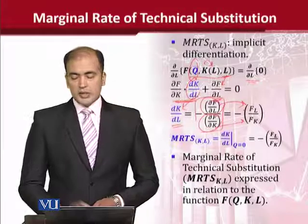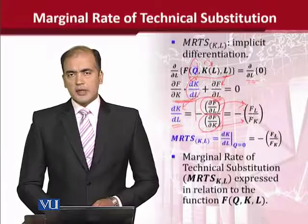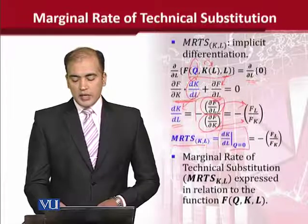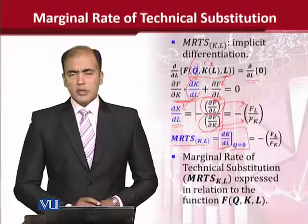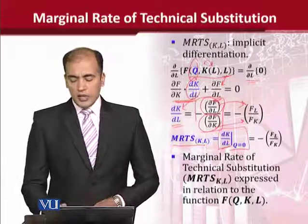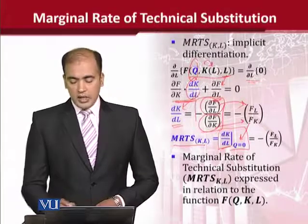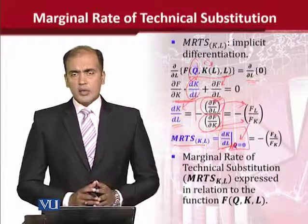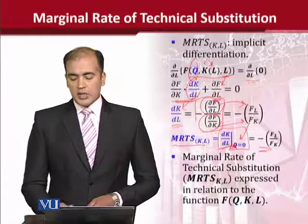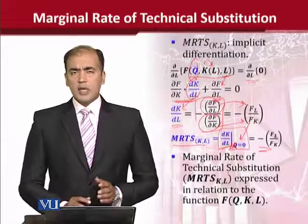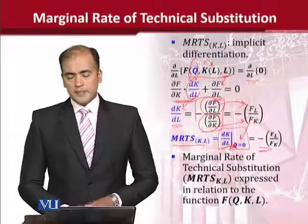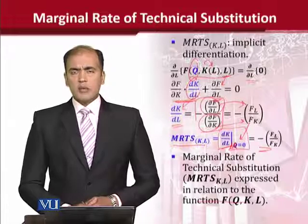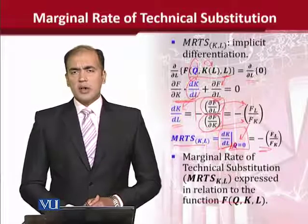And this will appear with a minus sign. Now we need to interpret this result. We will call this MRTS, and it also shows the rate of change of capital due to the rate of change of labor — the trade-off between labor and capital while keeping output constant, that is delta q equal to 0. It equals this negative value, and a negative value shows a negative slope. This is how, by using the implicit form, we have extracted the marginal rate of technical substitution of an isoquant.